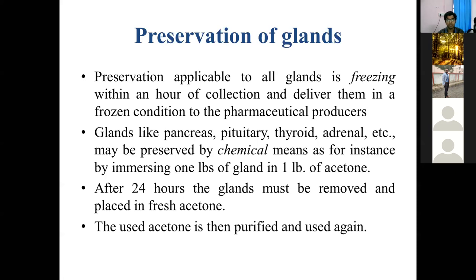For chemical preservation, glands like pancreas, pituitary, thyroid, and adrenal may be treated by chemical means. One of the most common chemicals used is acetone. One pound of gland is immersed in one pound of acetone. After 24 hours, the gland must be removed and immersed in fresh acetone. The previously used acetone can be purified and reused, minimizing the cost for the industry.